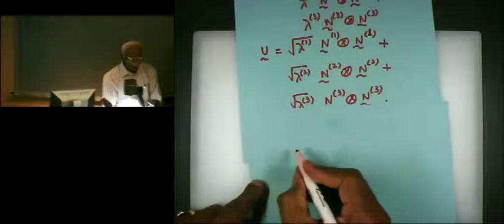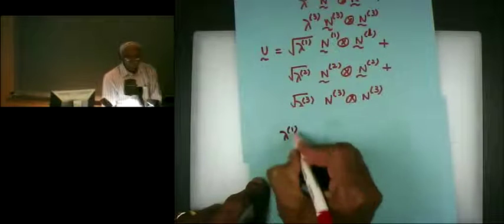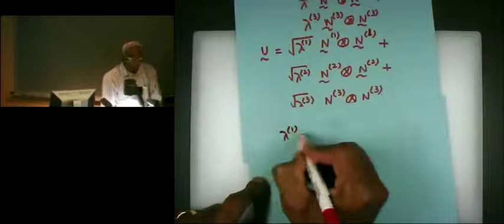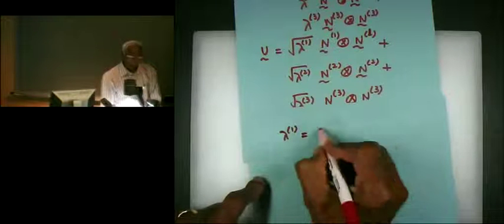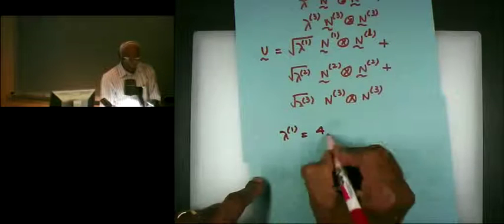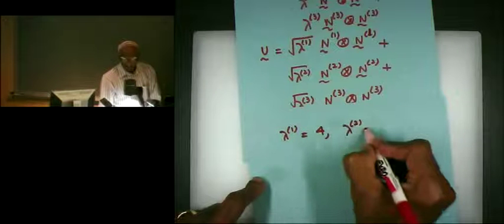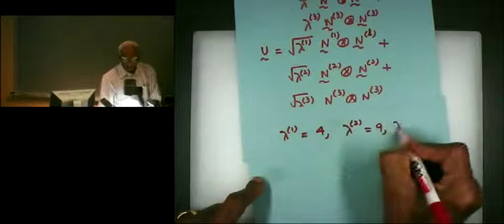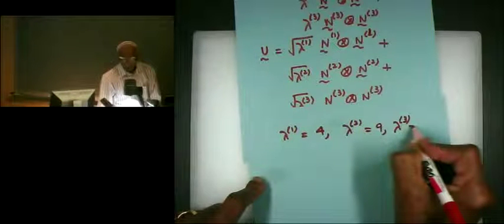Could you do a quick example of a tensor product with a symbolic vector like A1, A2, A3 and then B1, B2, B3? Okay, so let's assume that lambda-1 is 4, lambda-2 is 9, and lambda-3 is 25.